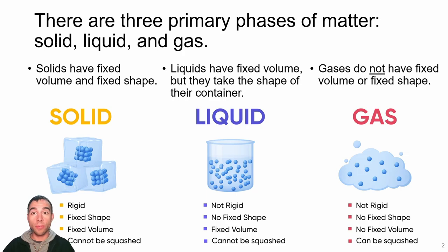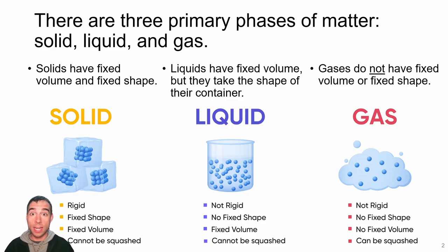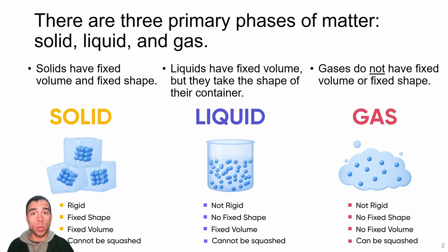We begin our discussion of gases by talking about phases of matter. Matter can exist in three different phases: solids, liquids, and gases. Solids have a fixed volume and a fixed shape — no matter what container they're in, they'll always be the same shape and have the same volume. We can't really compress them or elongate them without changing something about their properties.